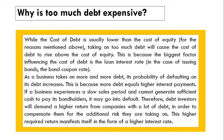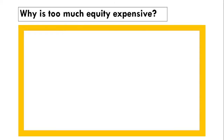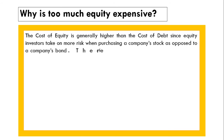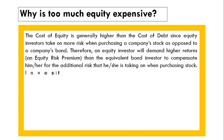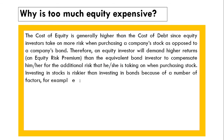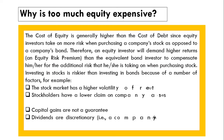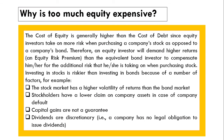This higher required return manifests itself in the form of higher interest rates. Now, too much equity financing is also expensive. The cost of equity is generally higher than the cost of debt since equity investors take on more risk when purchasing a company's stock as opposed to its bonds. Therefore, an equity investor will demand higher returns — an equity risk premium — to compensate for the additional risk. Investing in stocks is riskier than investing in bonds because the stock market has higher volatility of returns, stockholders have a lower claim on company assets in case of default, capital gains are not guaranteed, and dividends are discretionary — a company has no legal obligation to issue dividends.